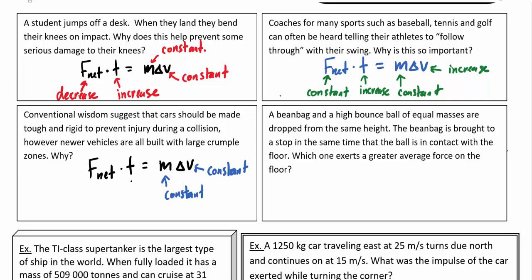But again, if you have crumple zones then you are going to increase the amount of time that you're going to come to a stop. Basically, that collision instead of happening in a few milliseconds might happen over a course of 10 milliseconds or something like that. And that can make a big difference because if we double or triple the time it's going to take to stop then we can reduce the force by a factor of 2 or 3 since they're directly related.